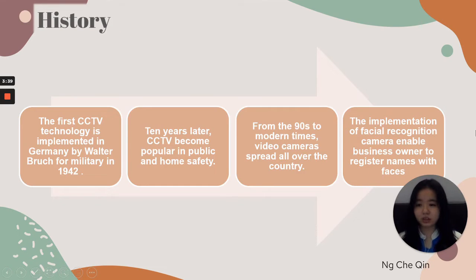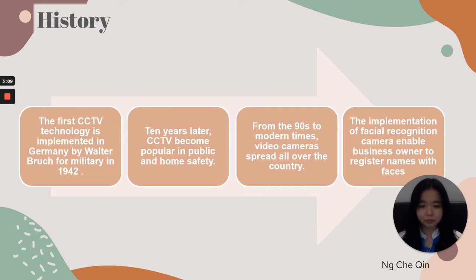The first CCTV technology was implemented in Germany by Werther branch for military use in the year 1942. About 10 years later, CCTV became popular in public and home safety. From the 90s to modern times, video cameras spread all over the country from houses to restaurants to office spaces and even buildings. The implementation of facial recognition cameras enables business owners to register names with faces and get alerts when registered faces come into view.